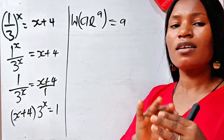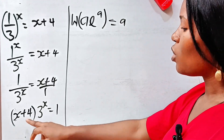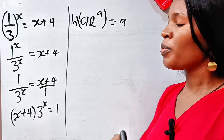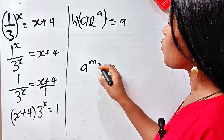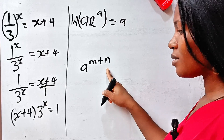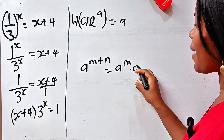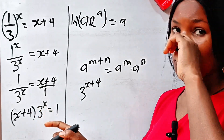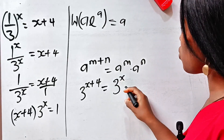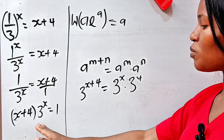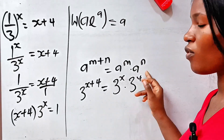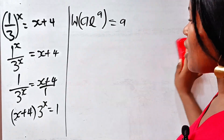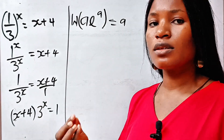Notice that we have x plus 4 as the coefficient before 3, so let's make the power x plus 4 as well. Remember that a^m = a^(m+n) requires multiplying by a^n. We have 3^x already, and we want 3^(x+4), which means 3^x multiplied by 3^4. So we multiply both sides of the equation by 3^4.